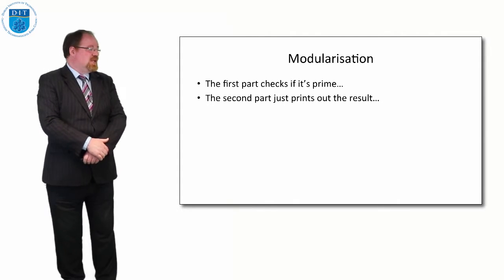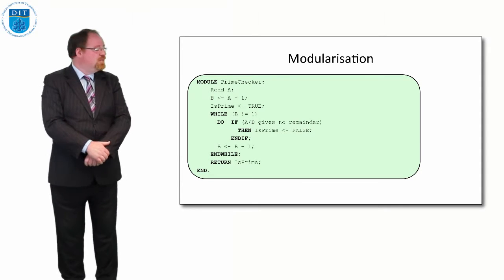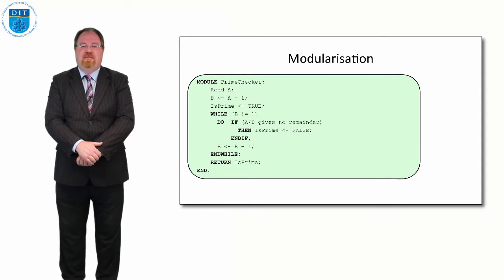So as we said, the first part checks if the number is prime and the second prints out the result. So let's create a module for the checking of a number is prime bit.